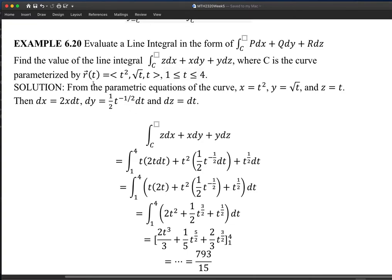Look at the equation of the curve very carefully. This part simply means x is t squared, y is square root of t, z is t. So accordingly, you can calculate dx, dy, dz. And they will be used in the calculation of pdx, qdy, rdz.